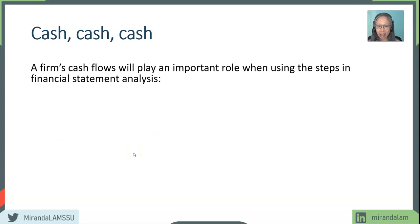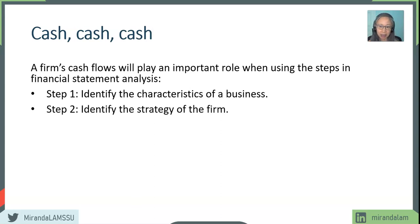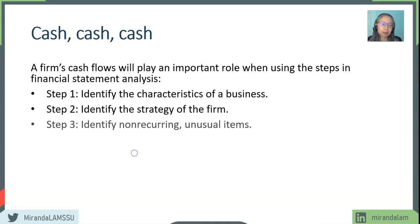We're going to take a look at the following steps. First of all, looking at a firm's cash flow can help us identify the characteristics of the business, including the life cycle of the business. It also will help us identify the strategy of the firm — whether a firm is a cost leader or a product differentiator trying to sell a premium product. Another important thing is identifying and separating non-recurring and unusual items versus the normal operation of the firm.